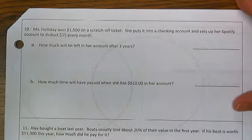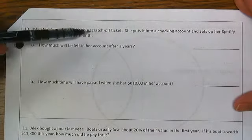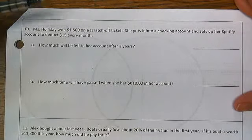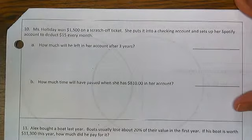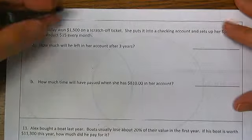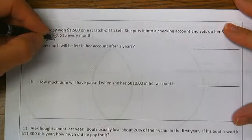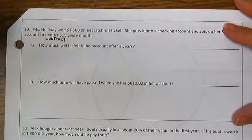Never happened. Ms. Holliday is a math teacher. She knows the lottery is guaranteed to lose you money. She puts the $1,500 into a checking account and sets up her Spotify account to deduct — that means subtract — $15 every month.